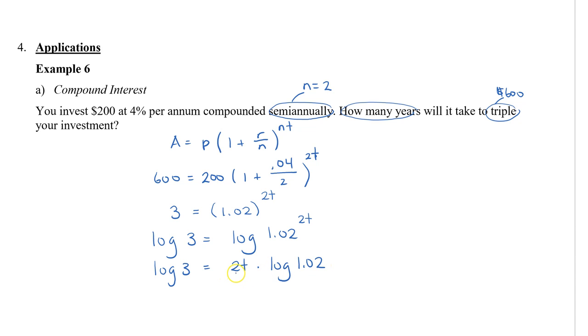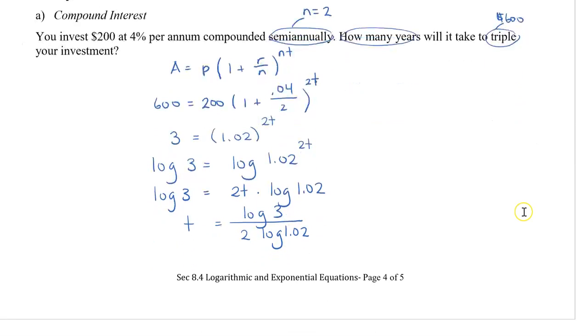We're going to divide both sides by 2 times log 1.02 to isolate the T. So T equals log 3 divided by 2 times log 1.02. When you plug this into your calculator, you're going to get 27.74.